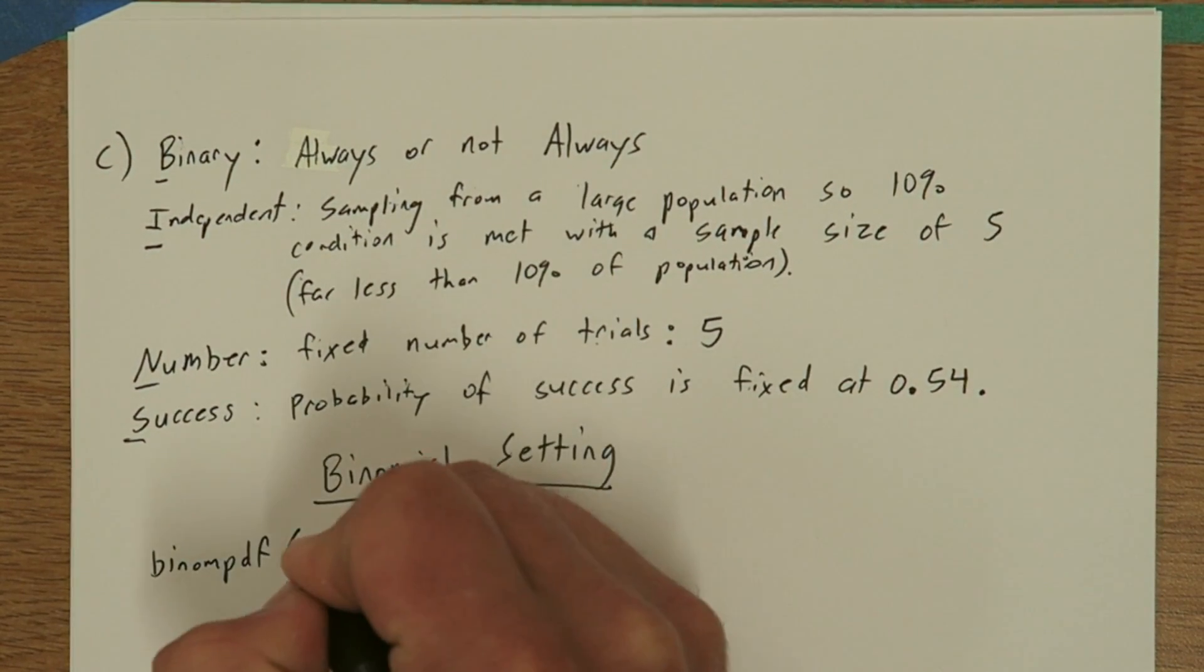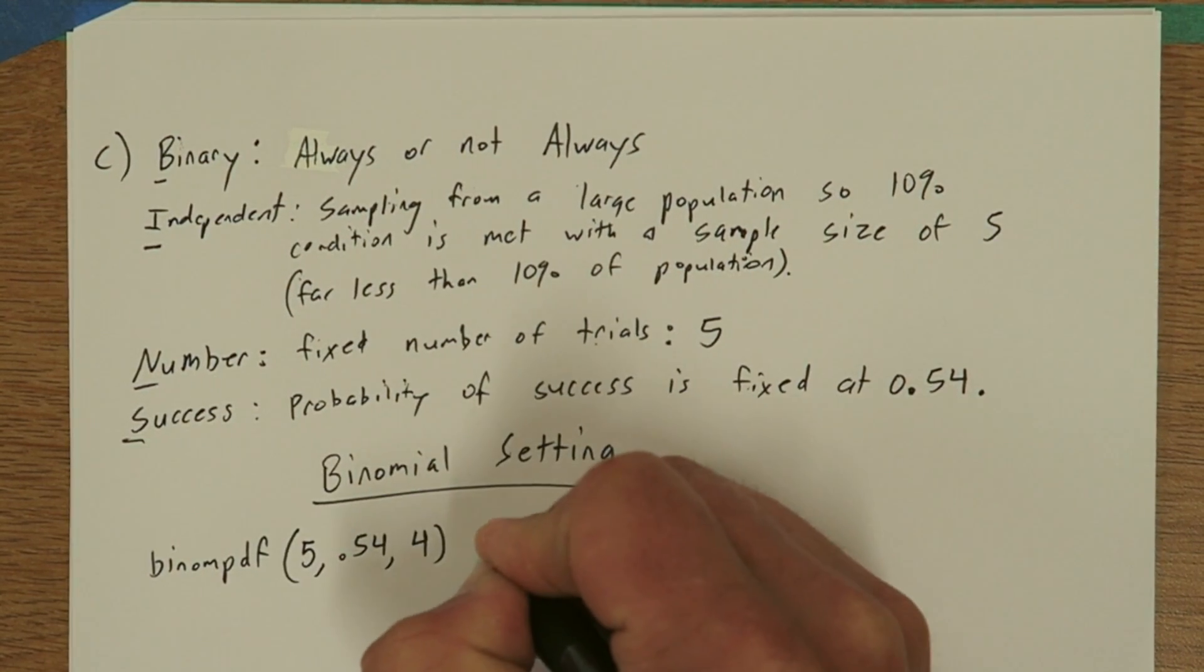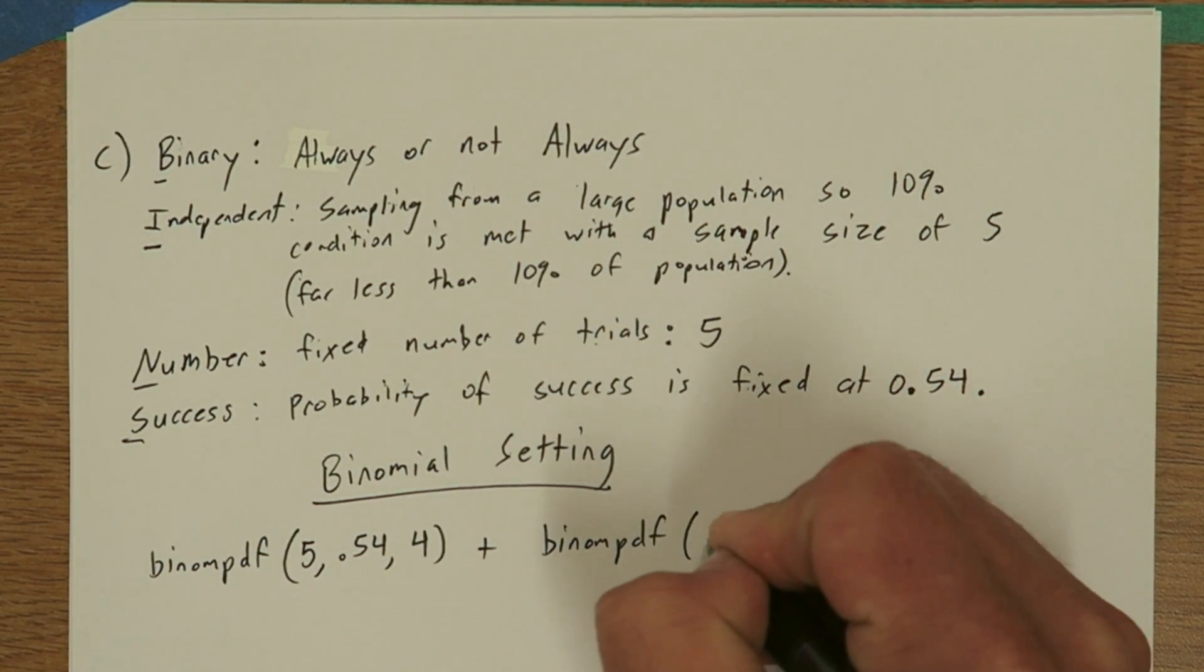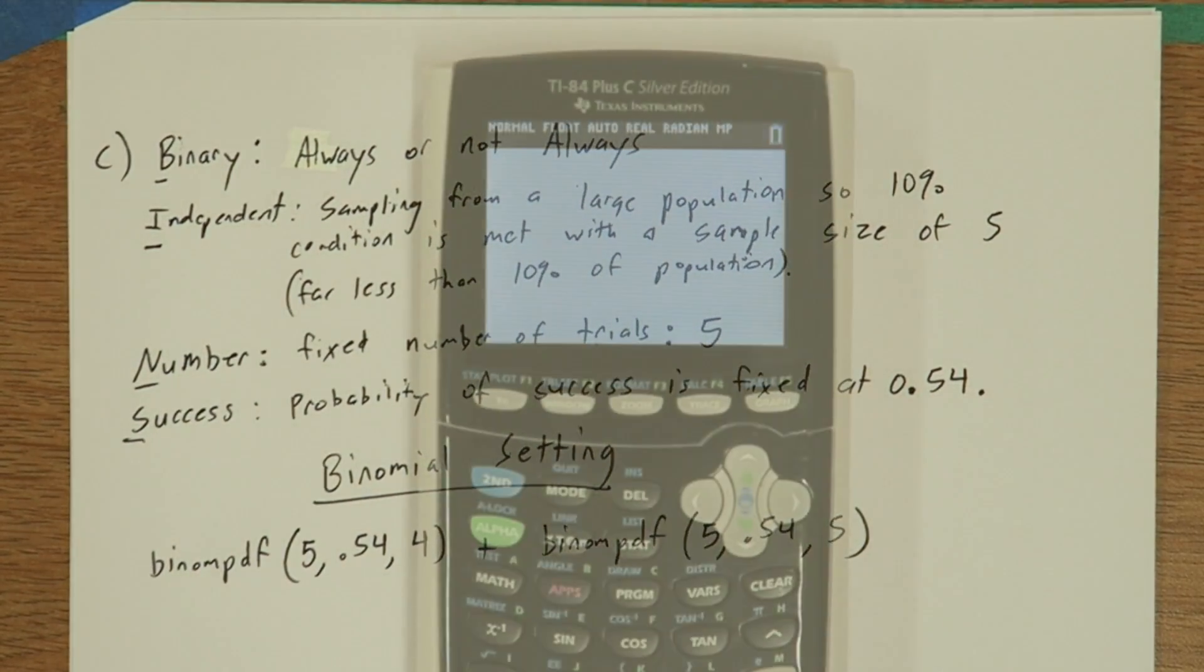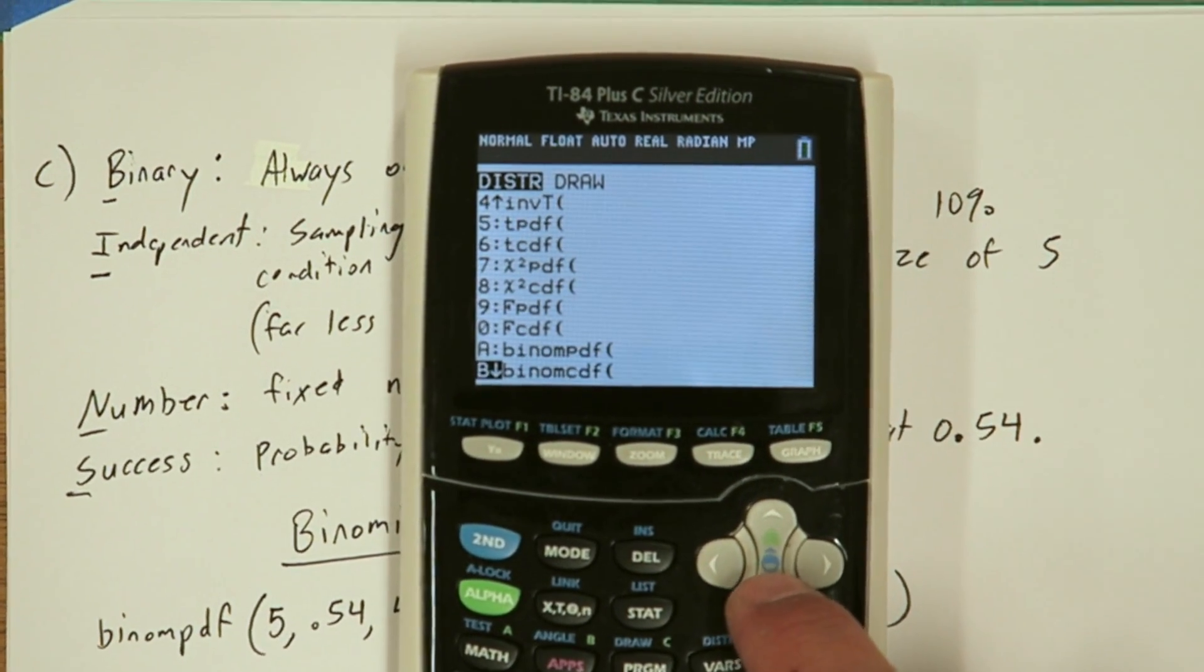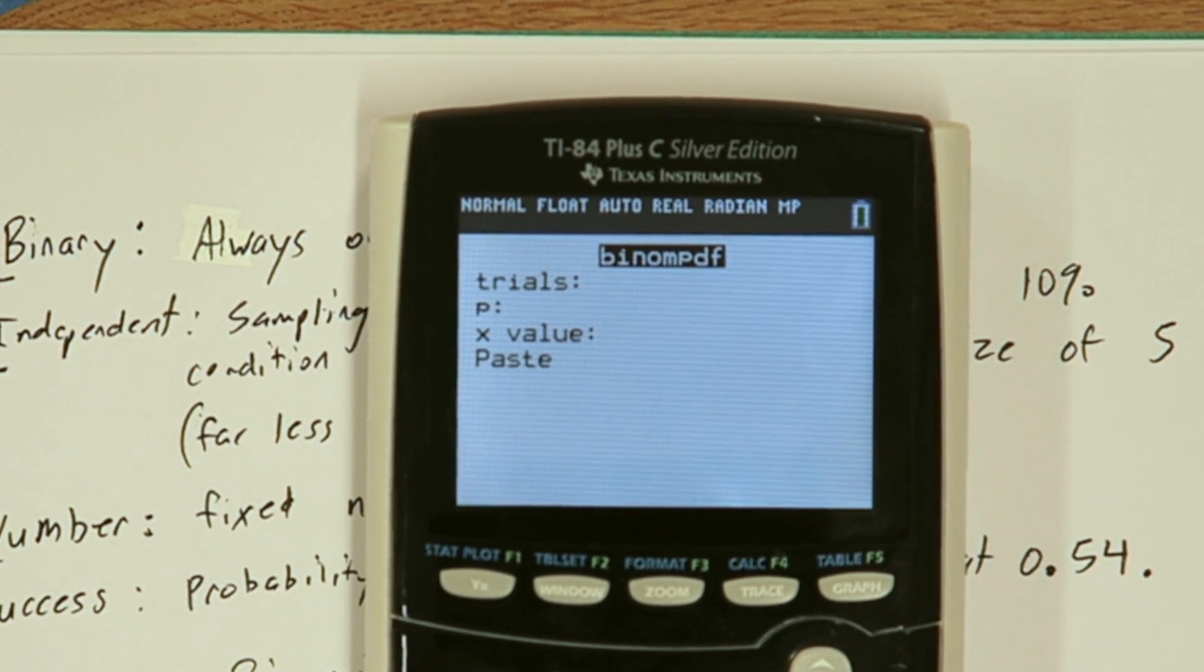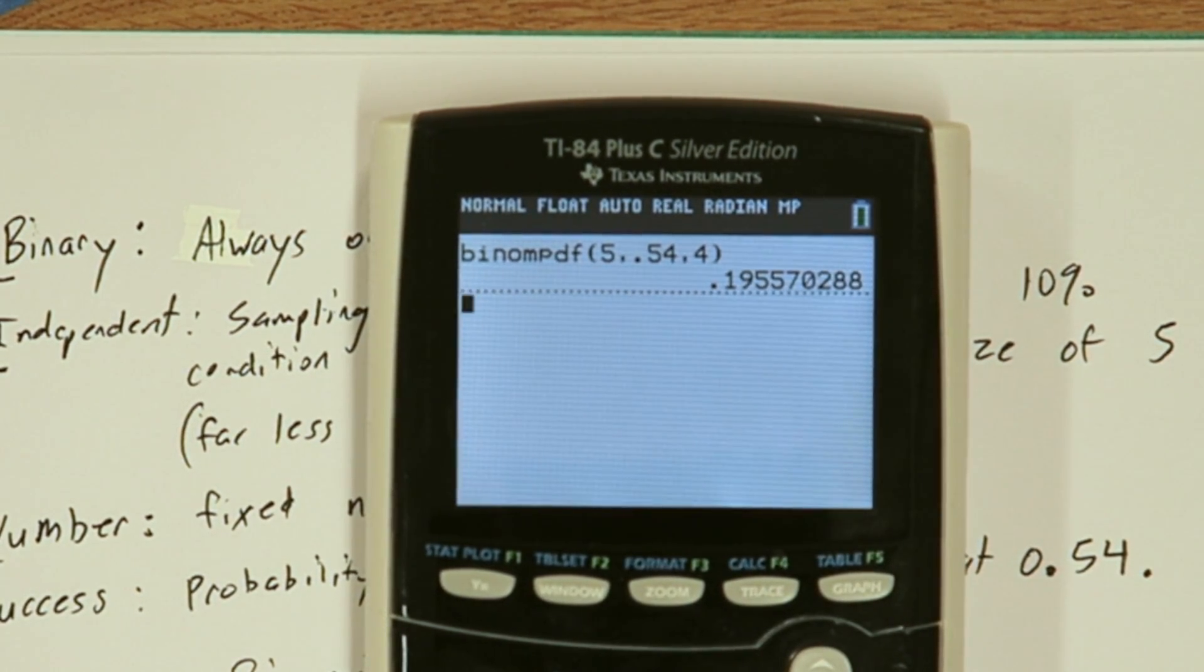We can use our calculator to figure out the probability. We have to use our calculator twice. We're going to use the binomial PDF function, and we're going to calculate the probability that exactly four people say always, and the probability that exactly five people say always. When we add those two together, we'll have our response. To do this on the calculator, press 2nd, vars, and go all the way down to binomial PDF. It says how many trials? Five. What's the probability of success? 0.54. And what's our x value? We're going to do four to start. So when I press enter and then enter again, I get that probability. There is a probability of .1955, approximately, that exactly four people answer always in our trial of five.